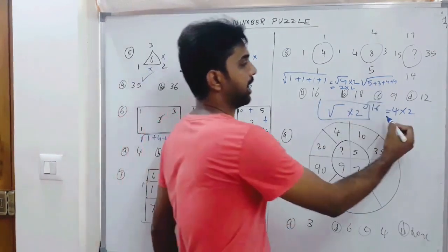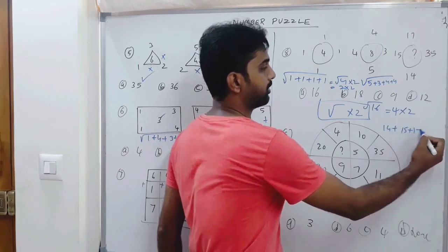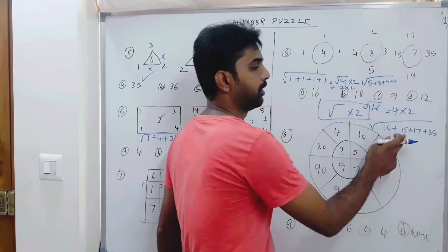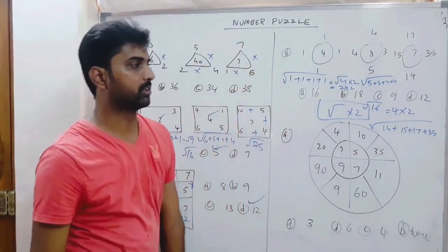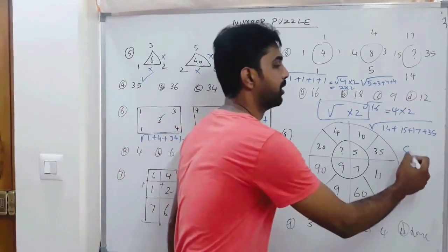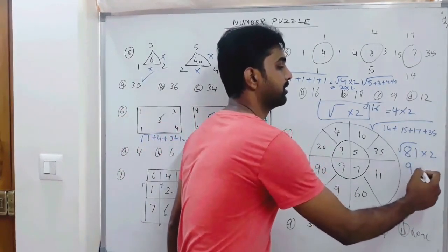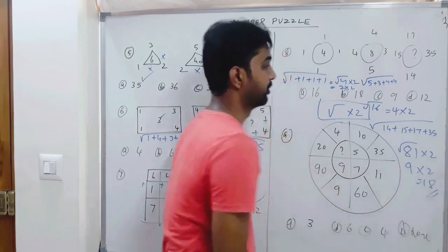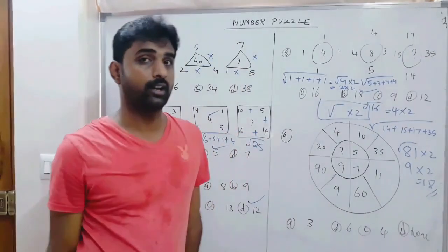Let us see the last one here. 14 plus 15 plus 17 plus 35: total is 29, 39, 46, 56, 76, and 76 plus 5 is 81. So square root of 81 is 9, and 9 into 2 is 18. So 18 is the right answer.